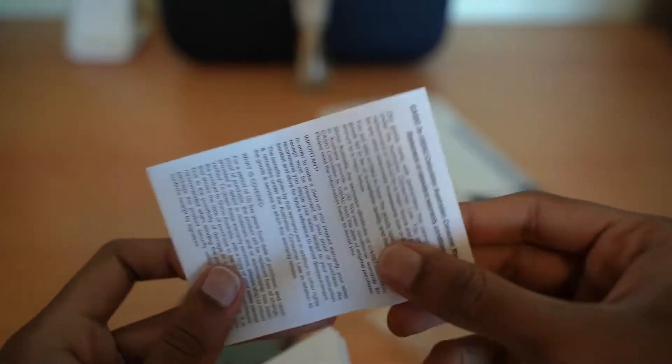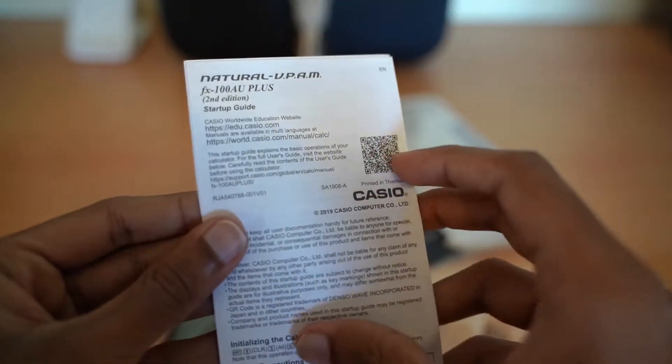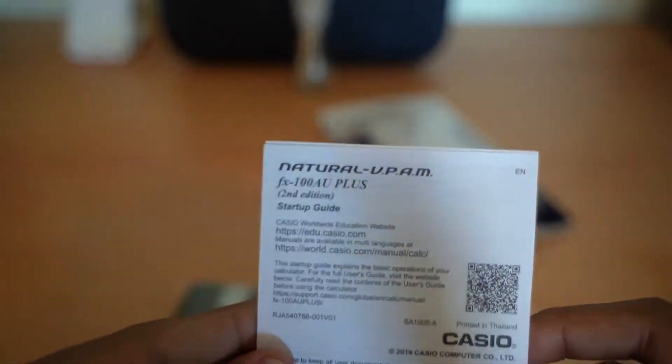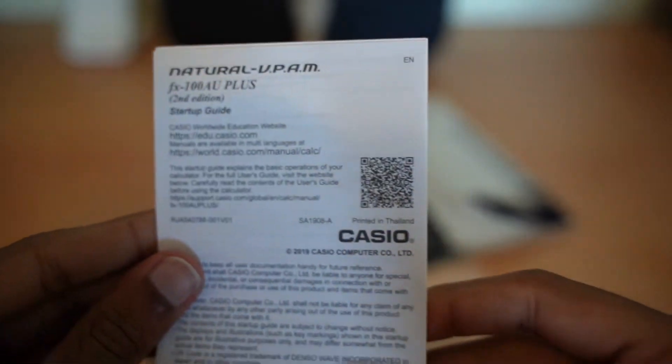Some warranty can or something in there. This is inside. 100AU naturally display plus. Casio logo and everything.